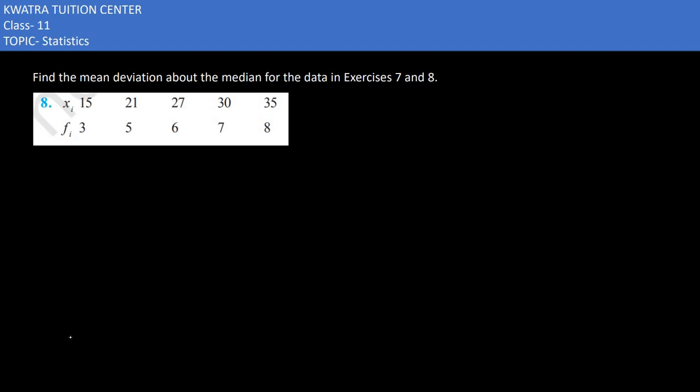So here in the 8th one it says again find the mean deviation about the median. So we need to get the median again. The same way, 15 is there, 21 is there, 27 is there, 30 is there.